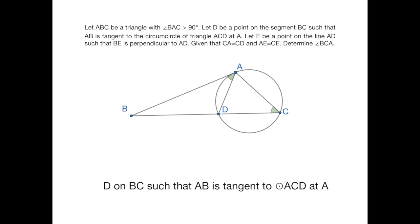ABC is a triangle with angle BAC larger than 90 degrees. D is a point on segment BC such that AB is tangent to the circumcircle of ACD. This is just another way of saying that angle BAD equals angle ACD. So these two green angles equal each other.